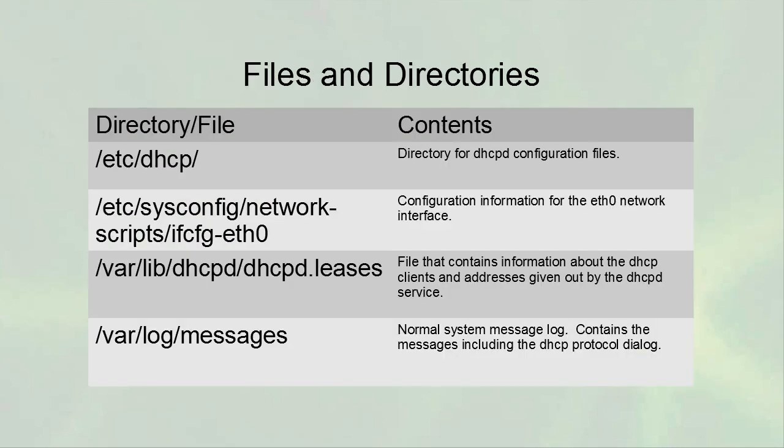The key directories: the /etc/dhcp directory contains all of your dhcpd configuration files. Your network configuration files are in the /etc/sysconfig/network-scripts directory, and they all start with ifcfg.